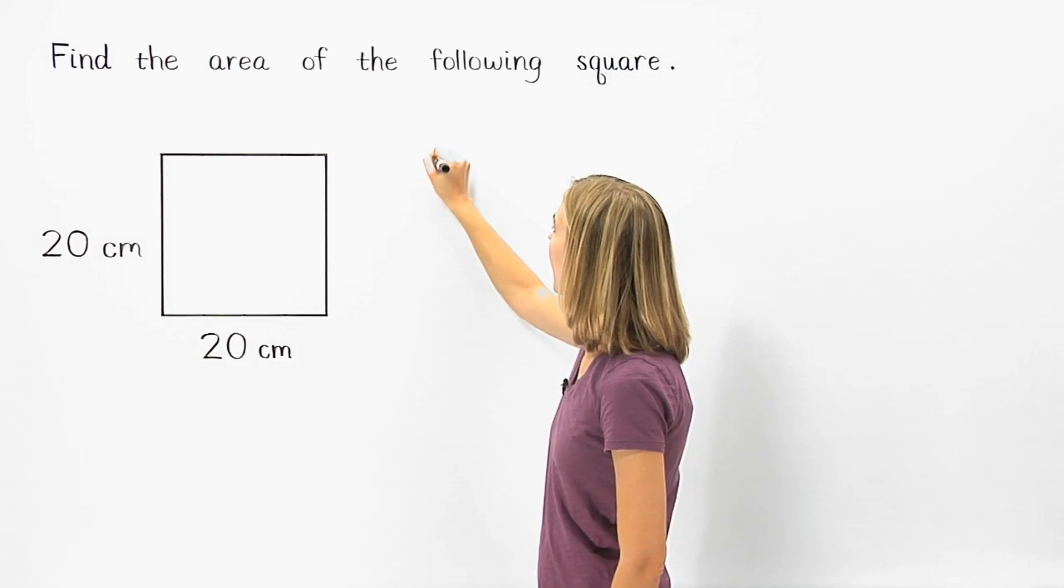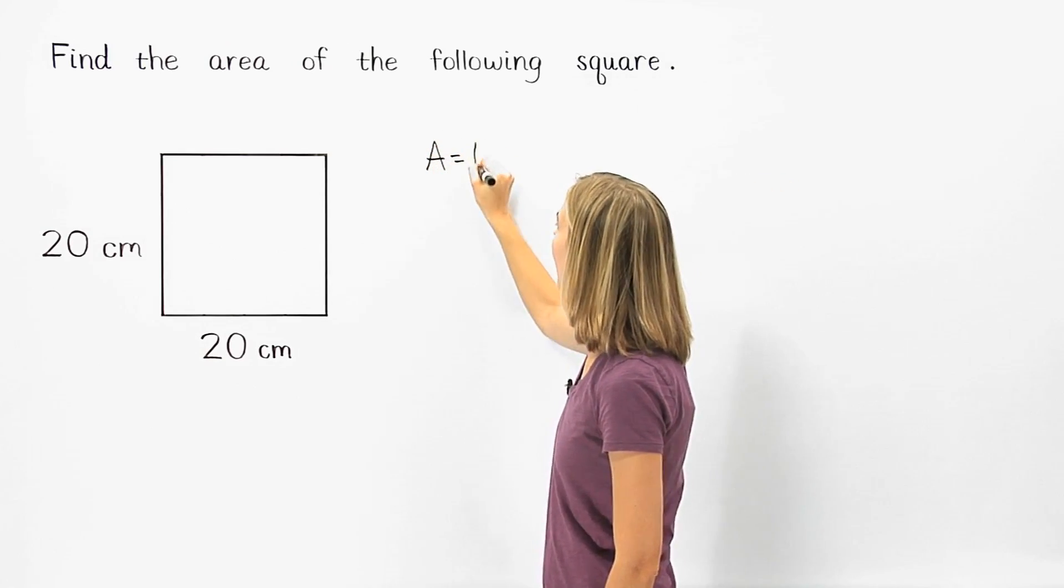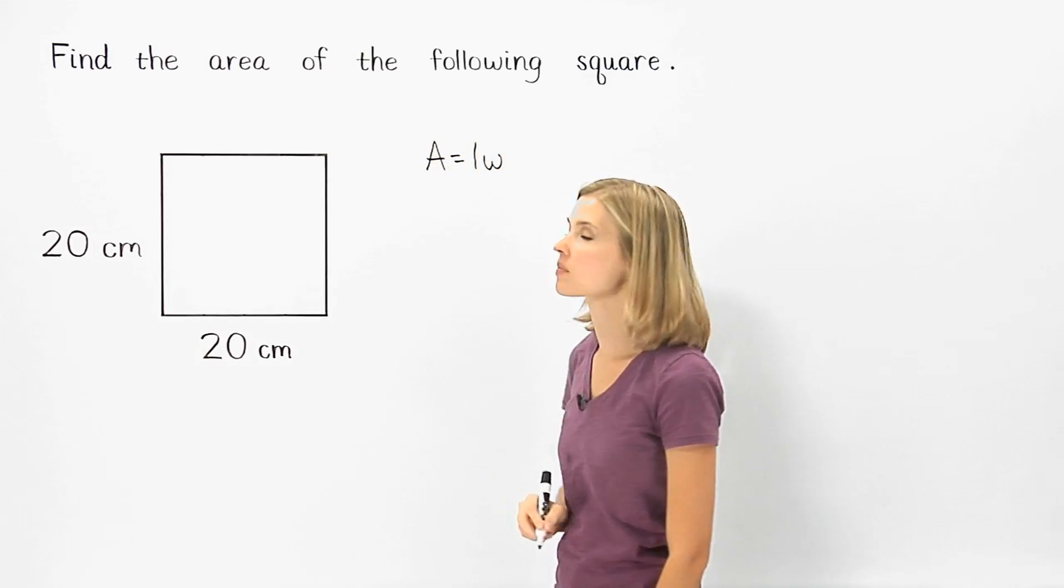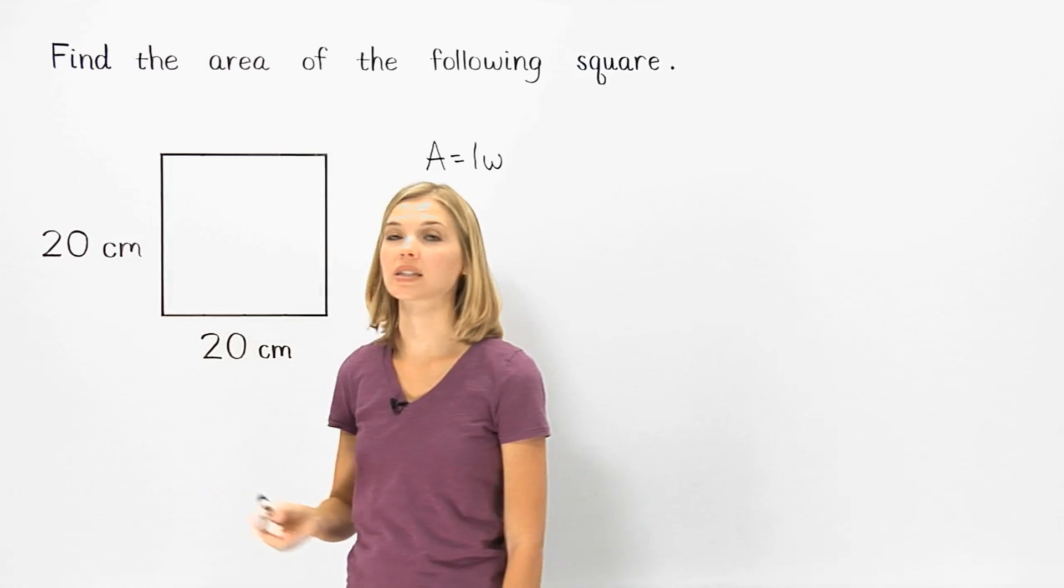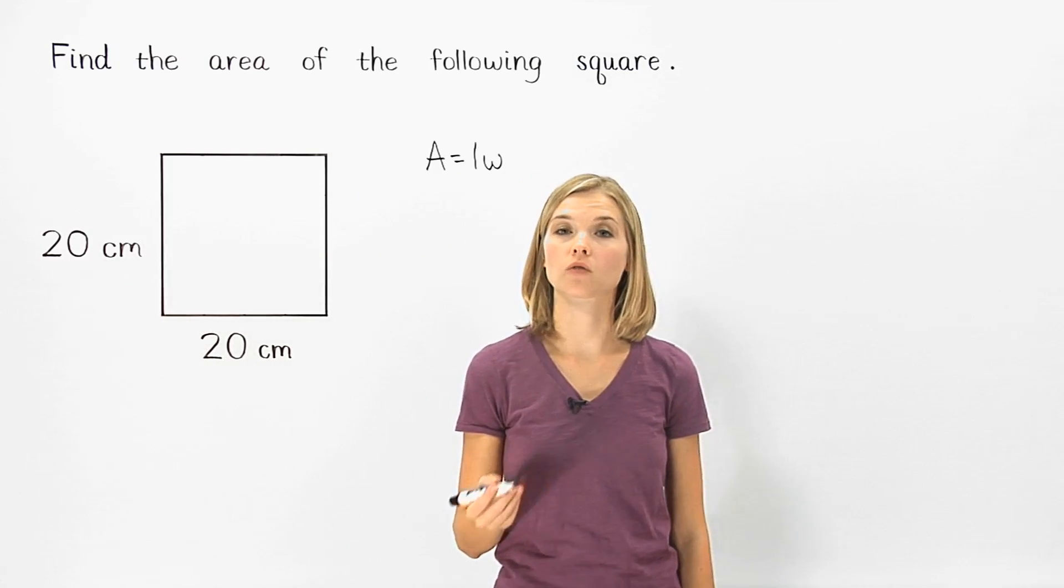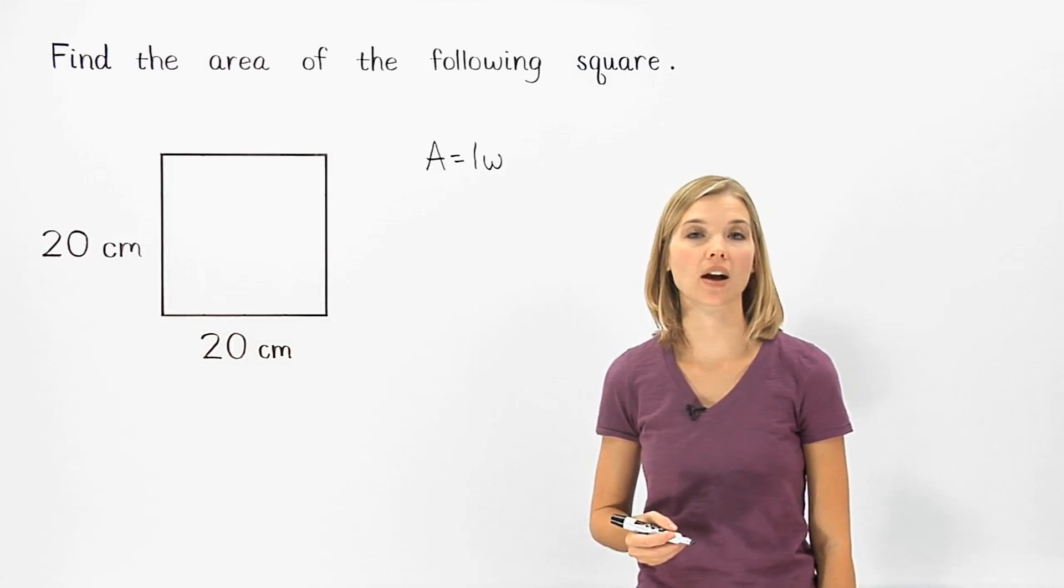So we can use the formula area equals length times width. However, since the length and width of a square are always equal, we use a special version of this formula to find the area of a square.